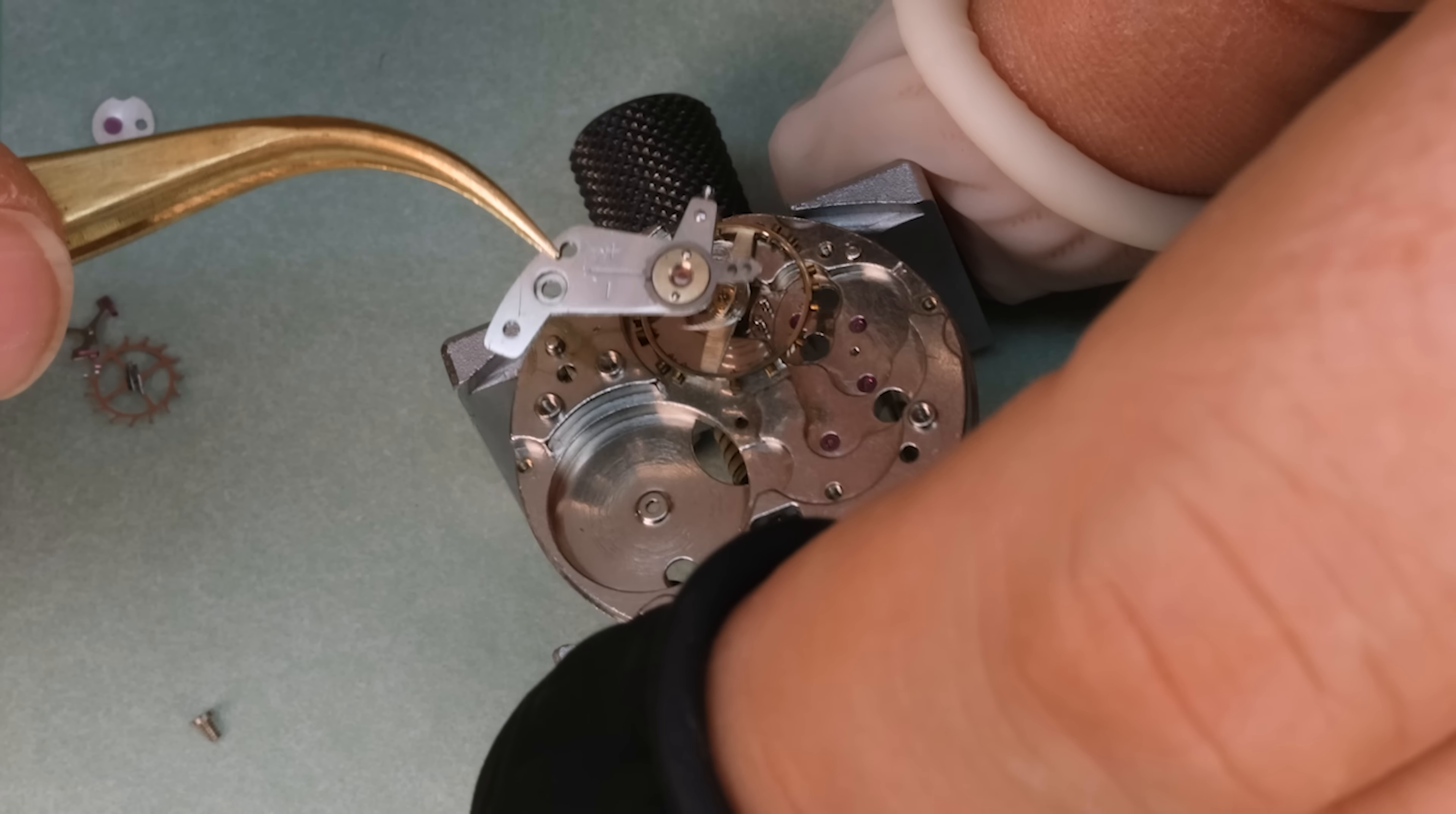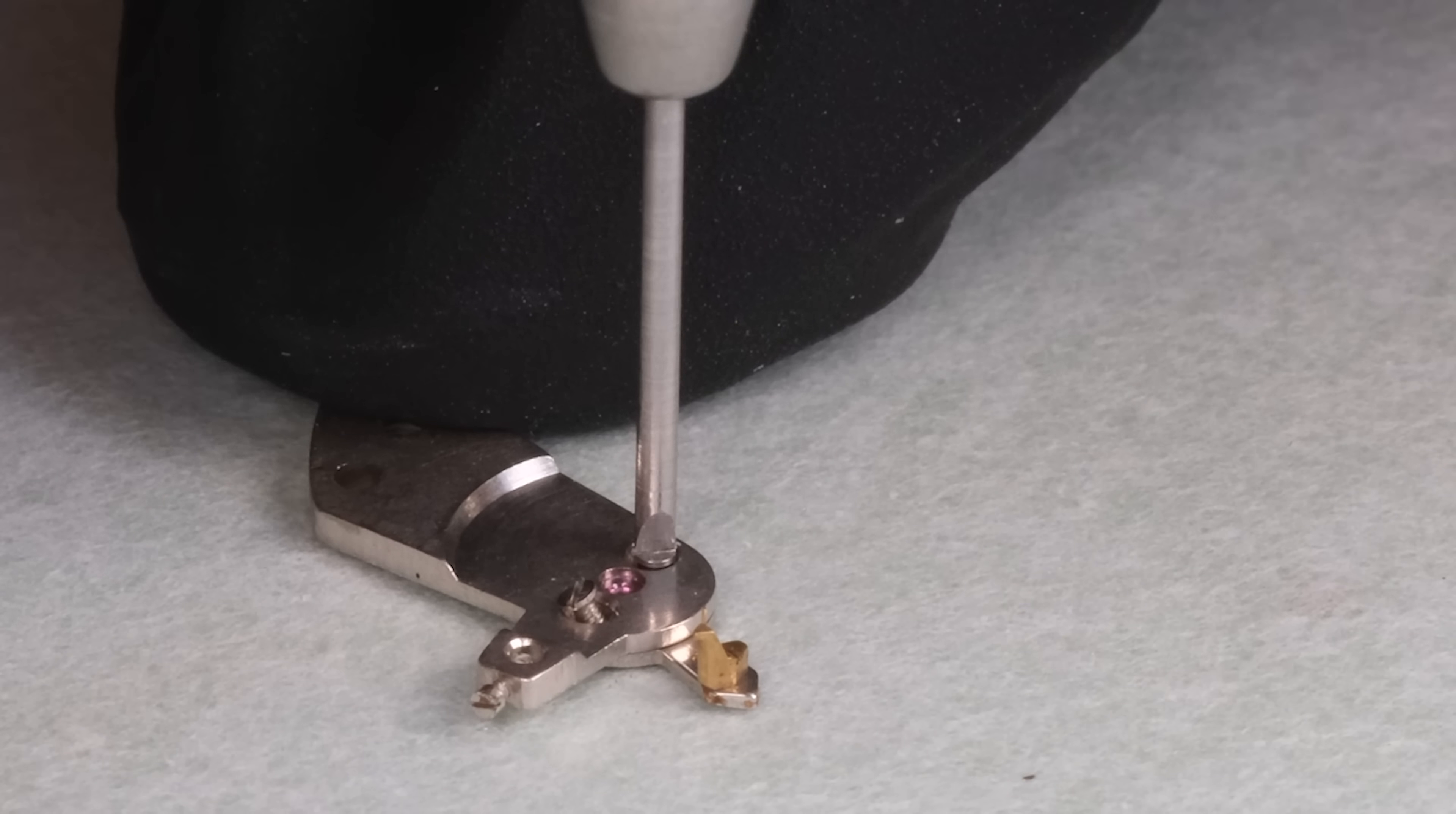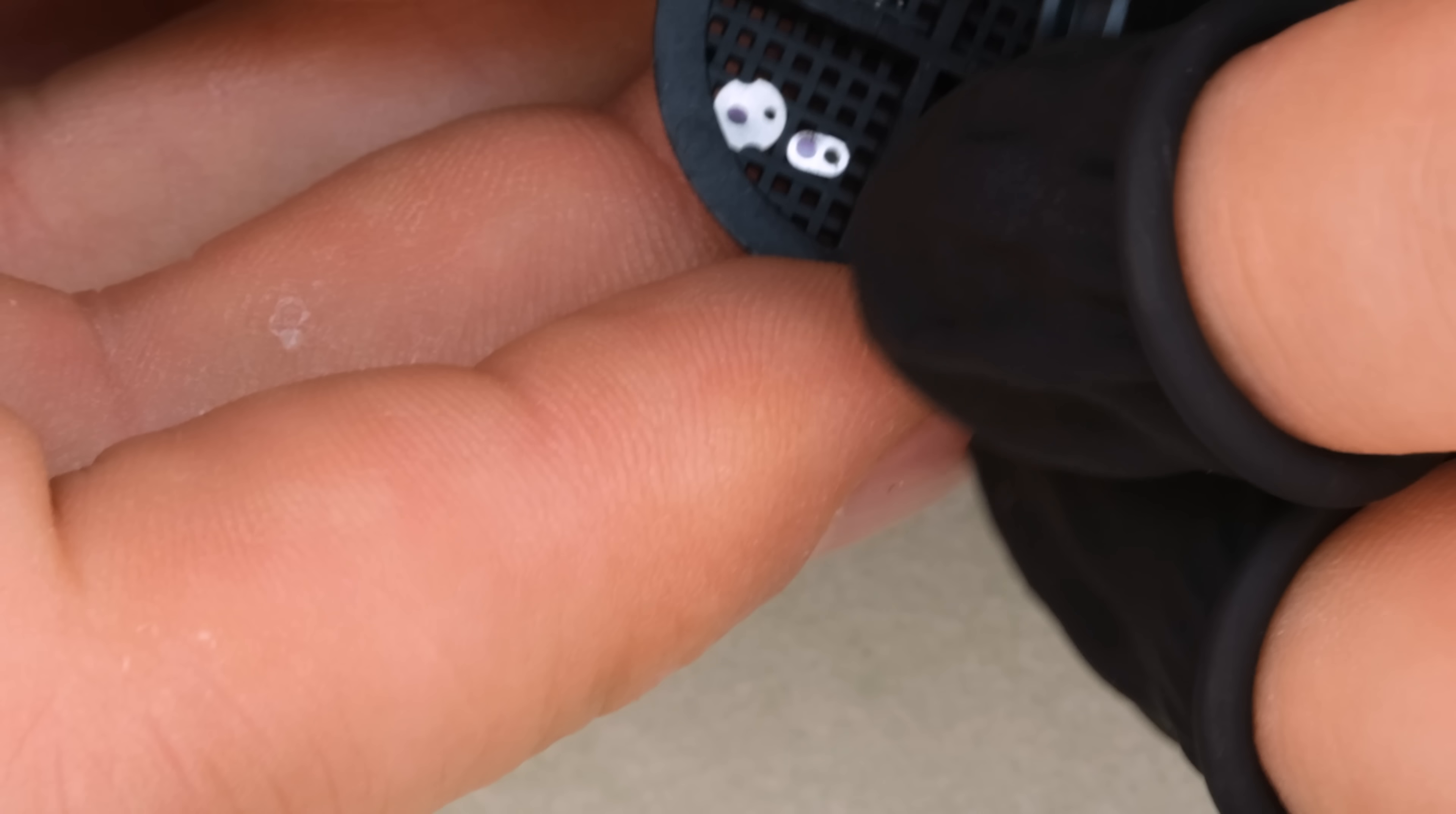All right, with the barrel ready we can turn our attention to the balance. Now, I mentioned that the balance is kind of the beating heart of the movement. It oscillates back and forth pretty rapidly. Old watches like this one typically have a beat rate of 18,000 beats per hour, which translates to two and a half rotations per second. And you can imagine that with the only source of power being that quite small spring inside the barrel, we need to make sure that there's as little friction as possible.